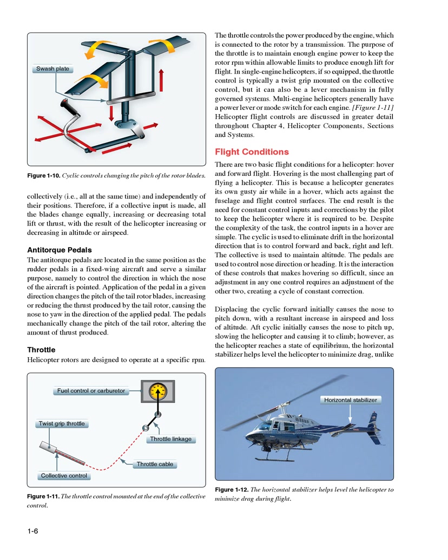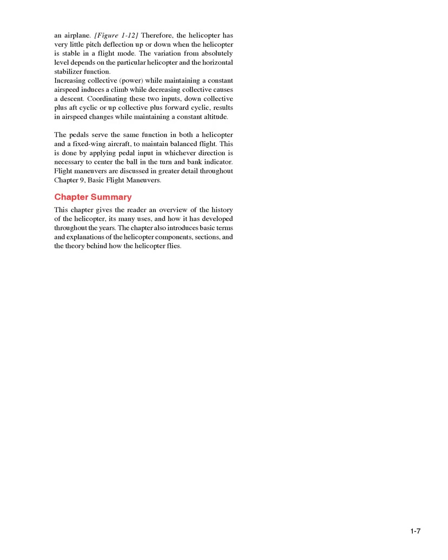Displacing the cyclic forward initially causes the nose to pitch down, with the resultant increase in airspeed and loss of altitude. Aft cyclic initially causes the nose to pitch up, slowing the helicopter and causing it to climb. However, as the helicopter reaches a state of equilibrium, the horizontal stabilizer helps level the helicopter to minimize drag, unlike an airplane. Therefore, the helicopter has very little pitch deflection up or down when it is stable in a flight mode. The variation from absolutely level depends on the particular helicopter and the horizontal stabilizer function.